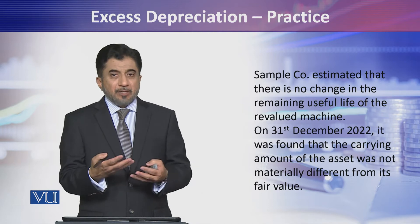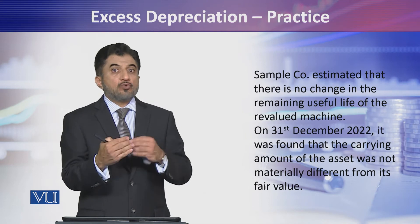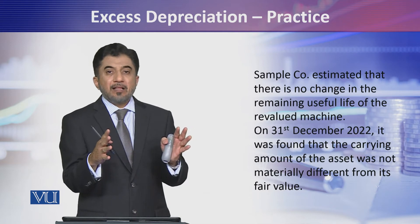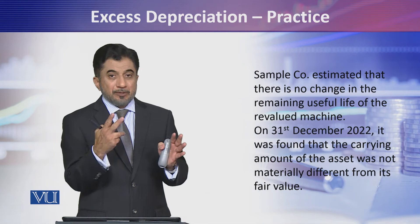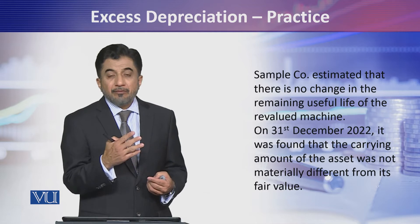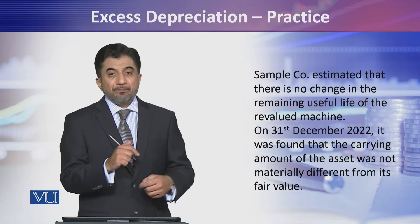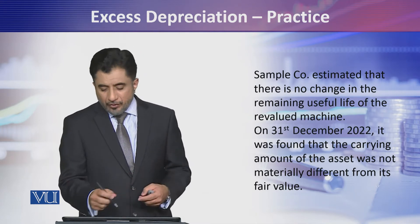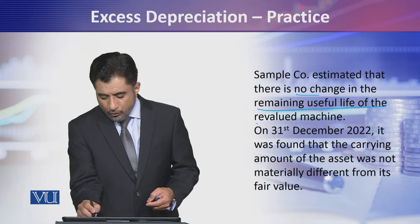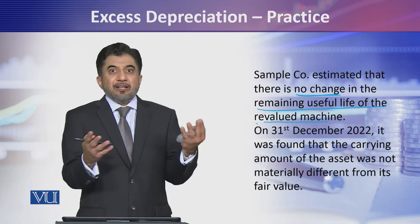Since you are calculating 10% of a figure, it means the asset's life was determined as 10 years, out of which two years have already been depreciated. If we carry forward the previous estimation, we have 8 years of remaining useful life for this machine asset. Management reviewed the remaining useful life and found that it has not changed due to the revaluation — it is still 8 years.